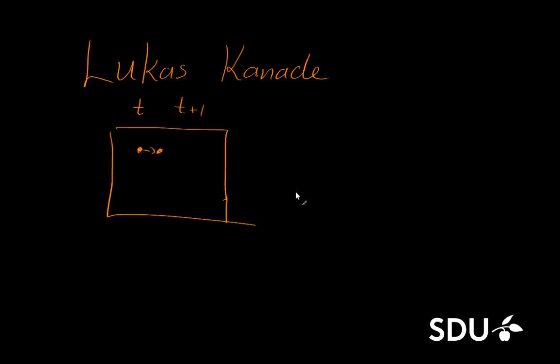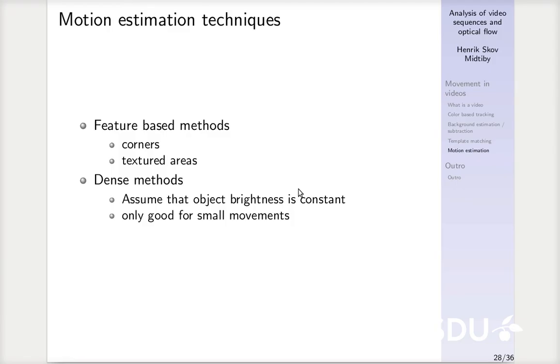And there are some quite nice methods that allow us to figure this out. And I'll try to look into at least one of these methods here. In general there are two types of methods. There are what is known as feature-based methods, where you locate some objects or locations in an image that is easy to locate in the next frames to look at. That could be corners in images or certain textured areas. In general, things that you can point out and say, okay, this feature is exactly here.